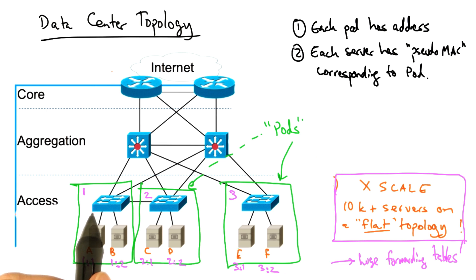For example, the switch in pod one only needs to maintain entries for these two servers with MAC addresses A and B. But it doesn't need to maintain independent entries for the servers with MAC addresses C and D. It only needs to maintain an entry for how to reach pod two. Likewise for pods two and pods three.